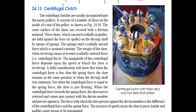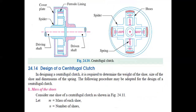Next we will study the centrifugal clutch. It consists of a number of shoes inside the rim of a pulley. The shaft is driven by a motor. The outer surface of each shoe is covered with friction lining material.